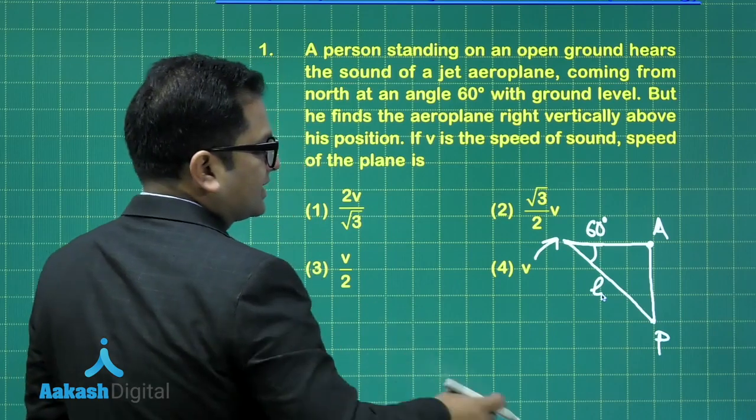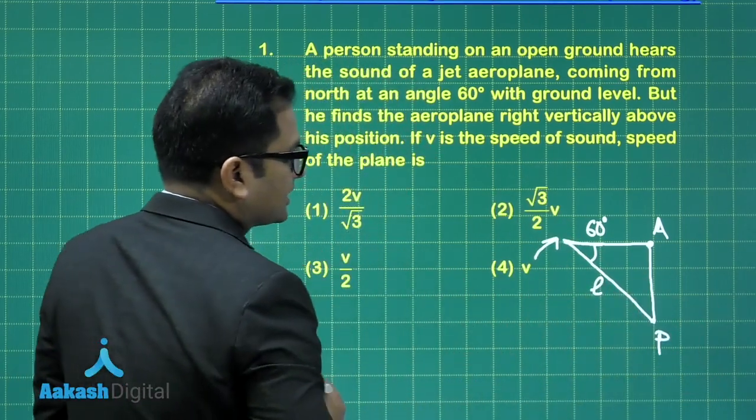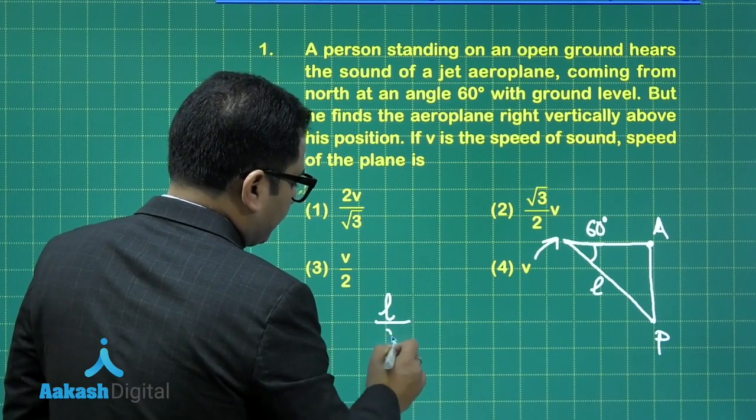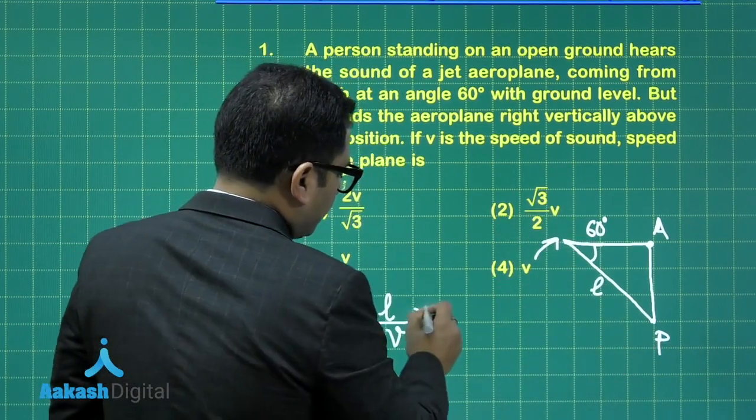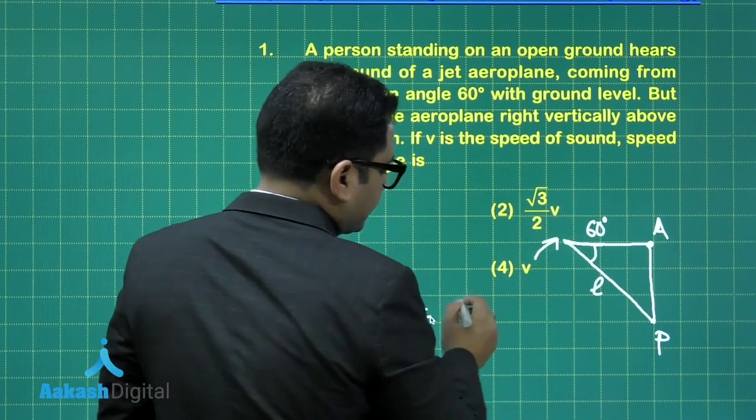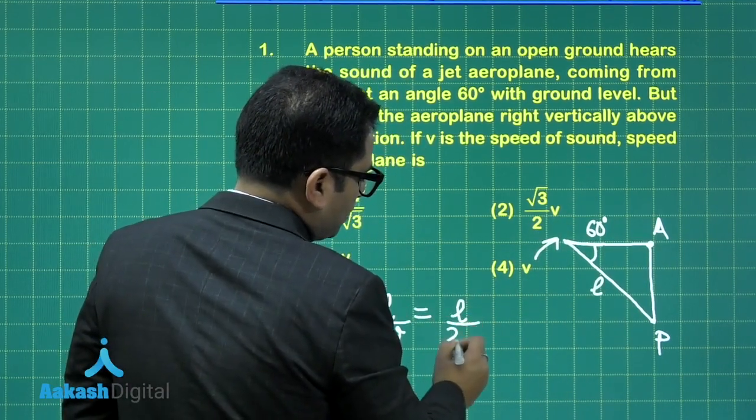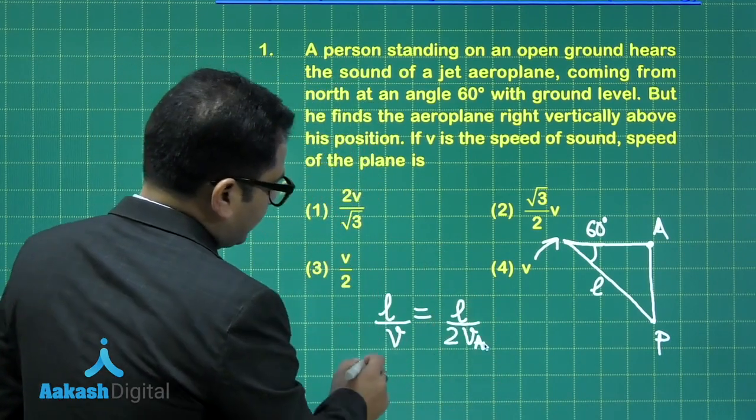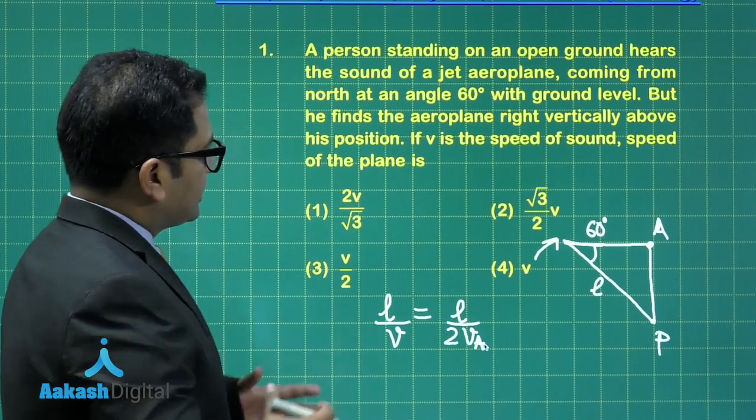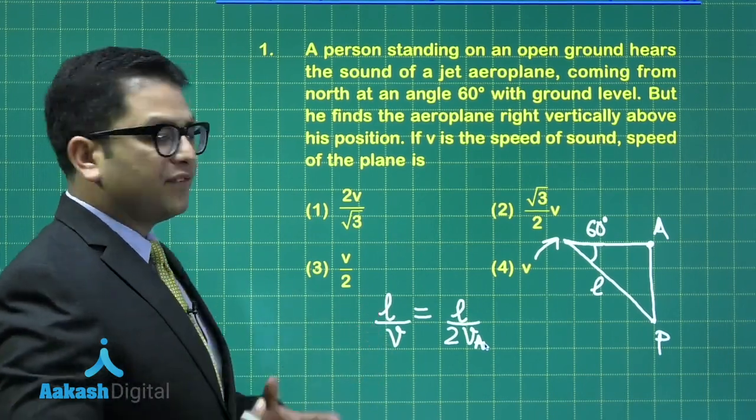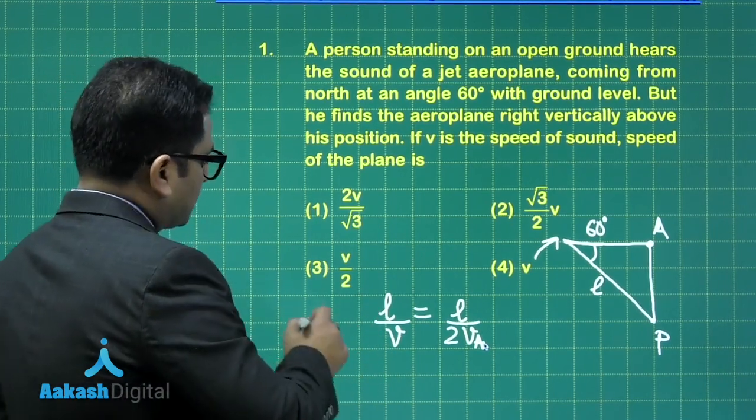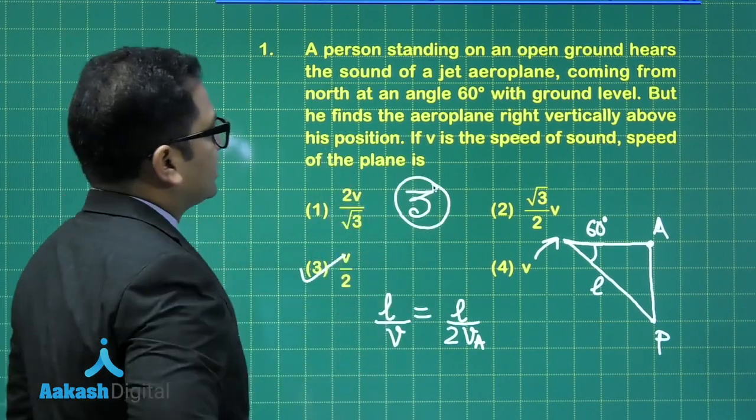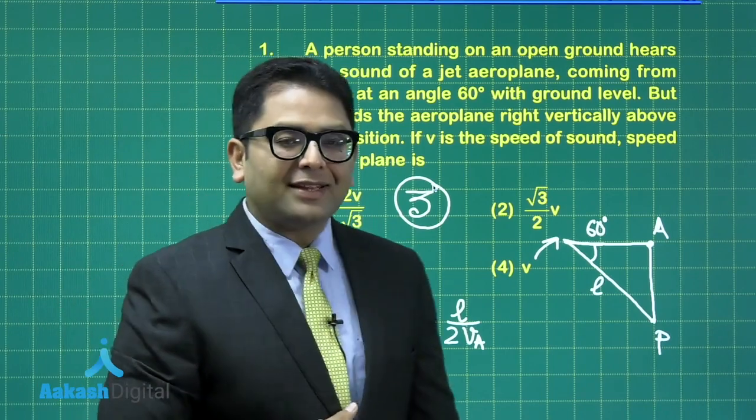If I set this as L, this is the distance which is L. So what we'll get is that L divided by V (that's the speed of sound in this direction) will be equals to L cos 60 (that's L by 2) divided by velocity of airplane. This is very straightforward. Velocity of airplane is going to be V by 2. Therefore, for question number one, third option is the correct option.